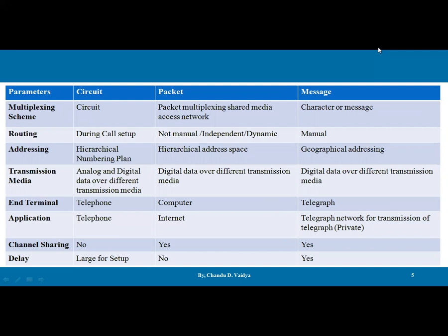Addressing scheme: a hierarchical numbering plan is used in circuit switching. In packet switching, hierarchical address space is used. In message switching, geographical addressing is used. Transmission media: analog and digital data over different transmission media is used in circuit switching. In packet switching, it is digital data over different transmission media. In message switching, also digital data over different transmission media. Terminal: telephone in circuit switching, computer or workstation or host in packet switching, and telegraph in message switching.